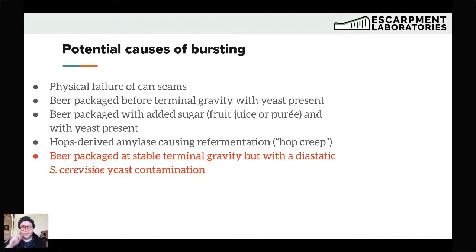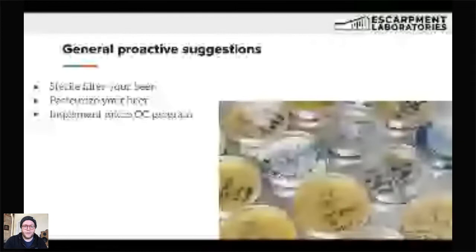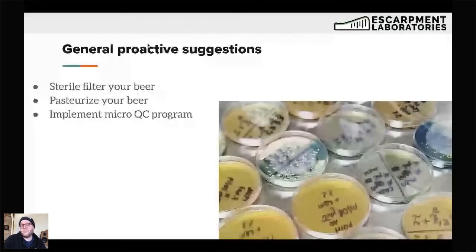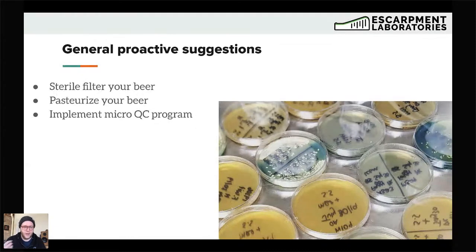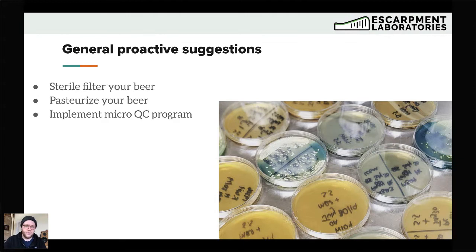The fifth potential cause of package bursting is beer packaged at a stable terminal gravity that may have a cross-contamination with a diastatic Saccharomyces cerevisiae yeast. We do have some general proactive suggestions. Unfortunately, these don't always align with the philosophy of craft beer. One easy option is to sterile-filter the beer, though as mentioned in the non-alcoholic beer talk, this doesn't necessarily mitigate all risk — anywhere after that sterile filter is still a potential vector for contamination.